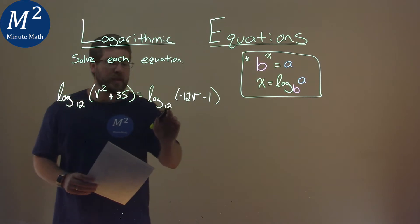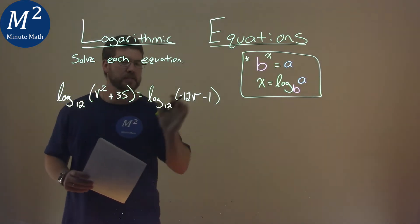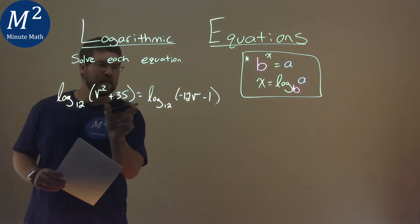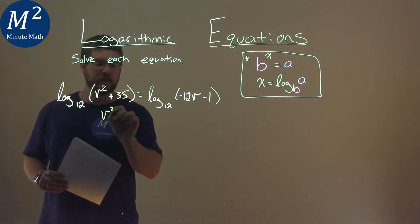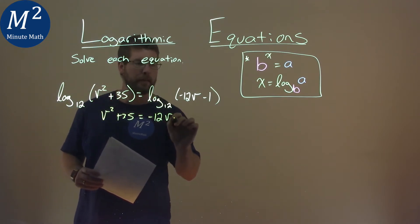Our logs have the same base here of 12. When that happens, and it's the only thing on each side of the equation, we can set the insides equal to each other. So we set v squared plus 35 is equal to negative 12v minus 1.